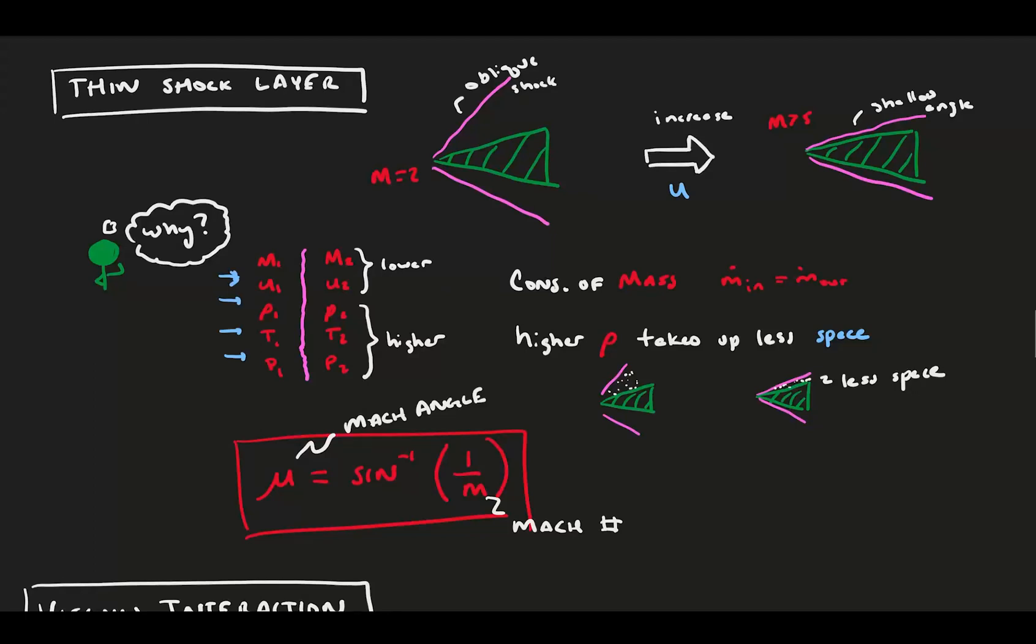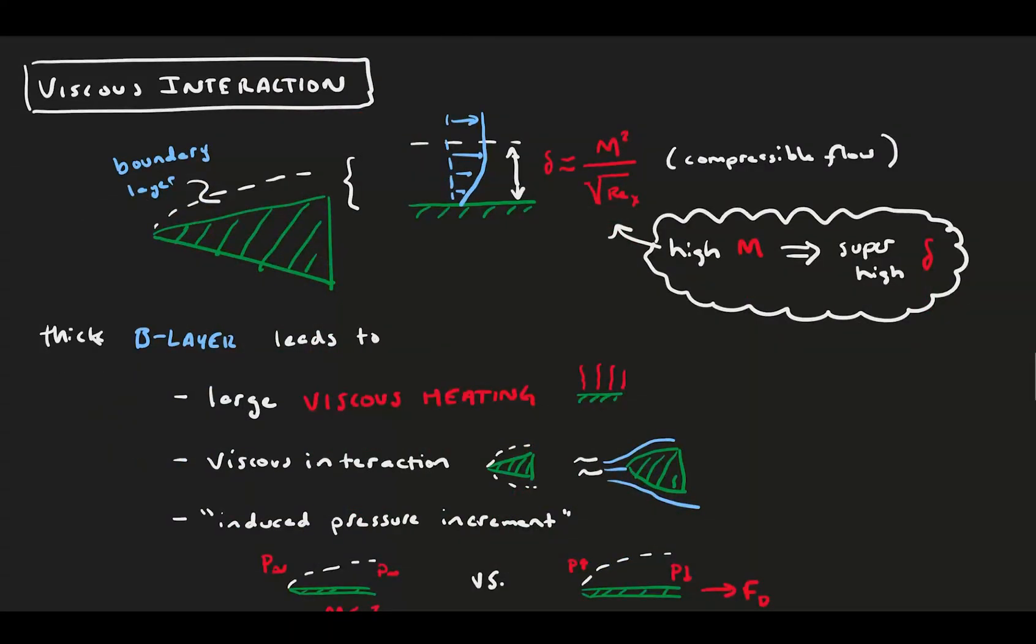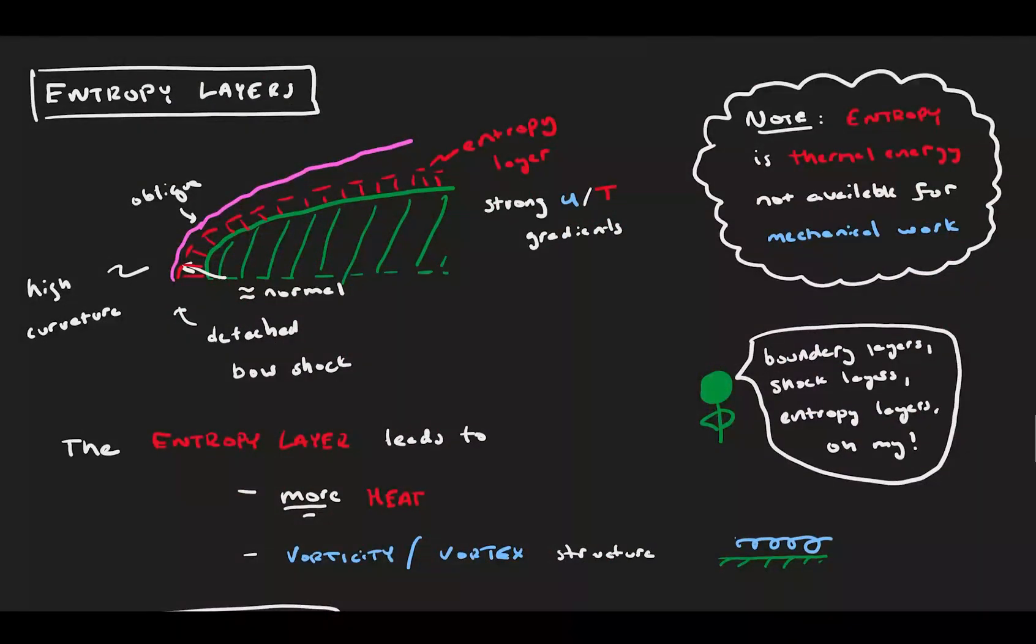From a zoomed out perspective, we see thin shock layers due to the high Mach number pushing down the shock angle. The boundary layer becomes much thicker and important in consideration in design and flow mechanics leading to heating, more drag, and shock boundary layer interaction. A third layer is introduced through entropy layer, where we now have a small layer near the wall with a strong temperature gradient.